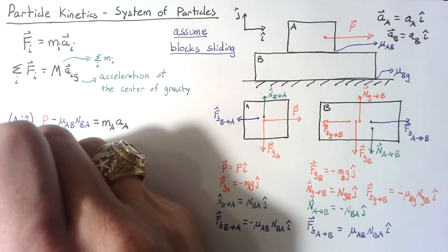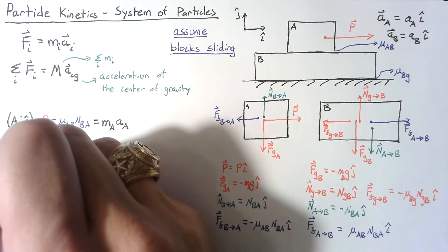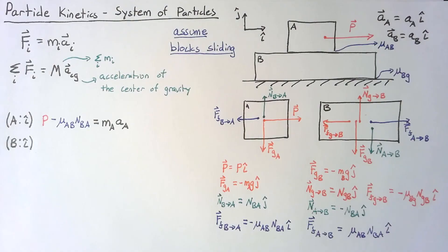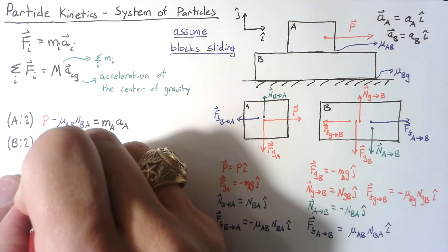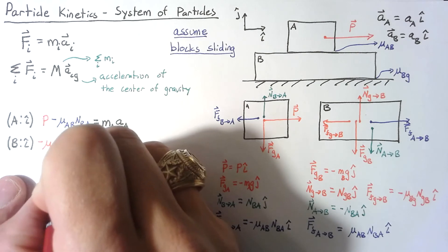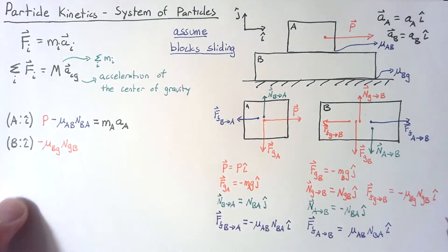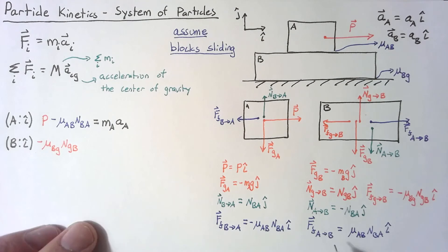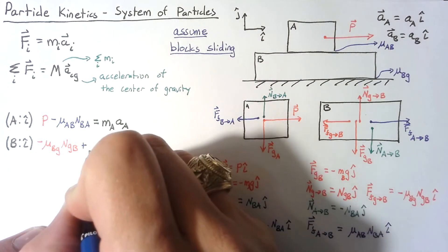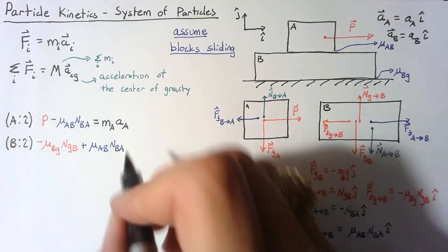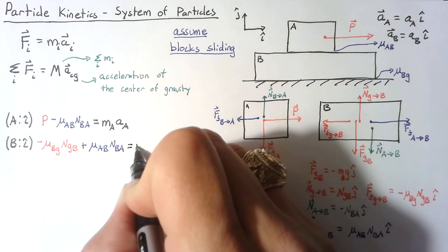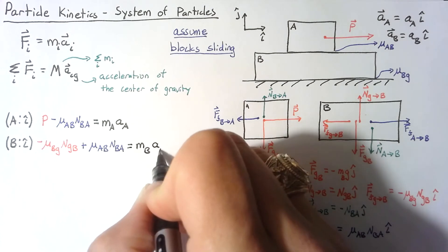For block B in the I direction, we have the friction force of the ground acting on B and the friction force of A acting on B. This gives: negative mu_BG times N_GB plus mu_AB times N_BA equals mass of B times acceleration of B.